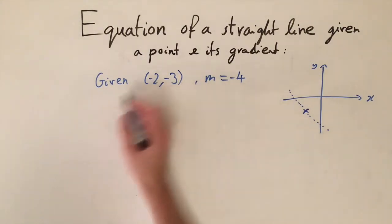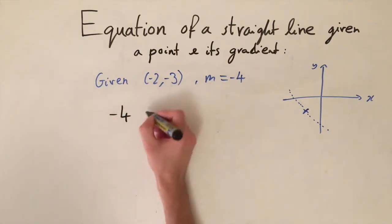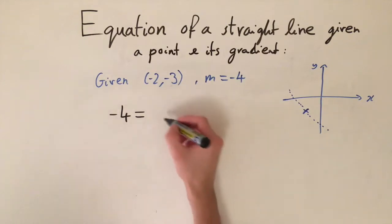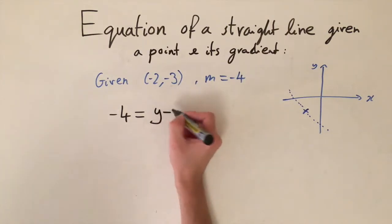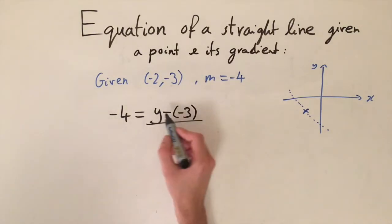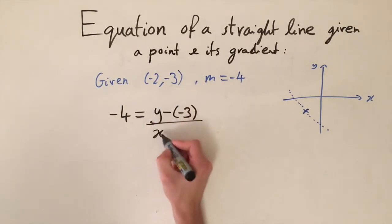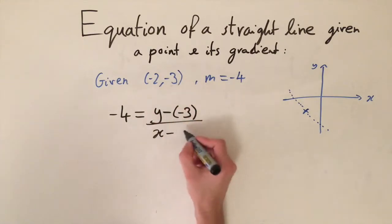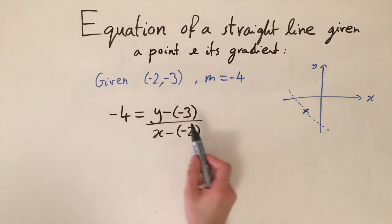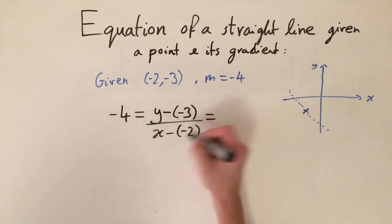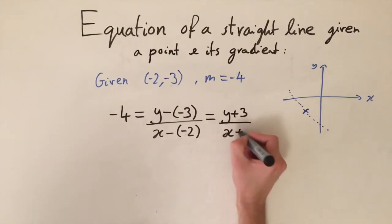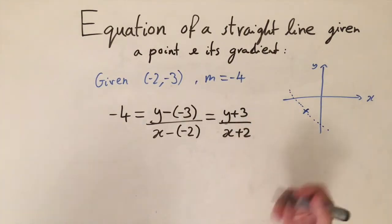Using the formula again: minus 4, the gradient, equals the change in y divided by the change in x. We write y minus the y-coordinate, which is minus 3, so y minus (minus 3), on top, divided by x minus the x-coordinate, which is minus 2. It's important to keep track of the negative signs, because these cancel out: this simplifies to y plus 3 divided by x plus 2.